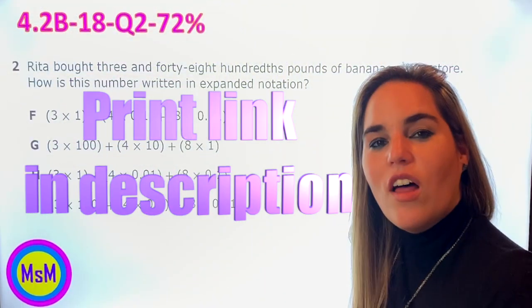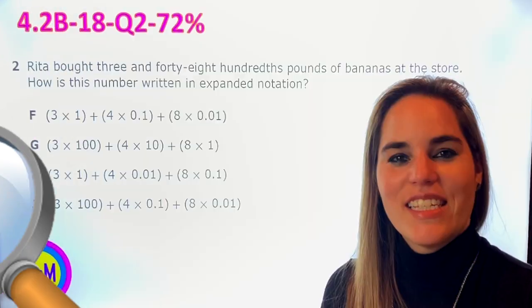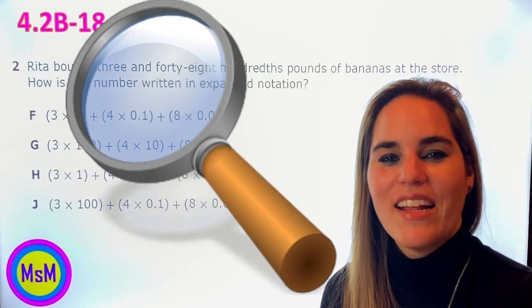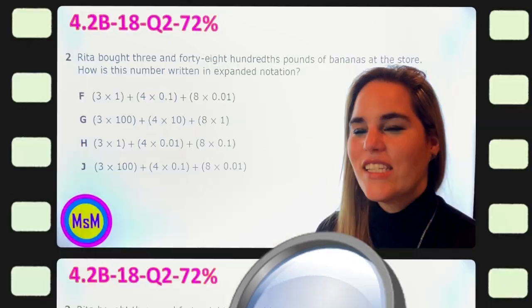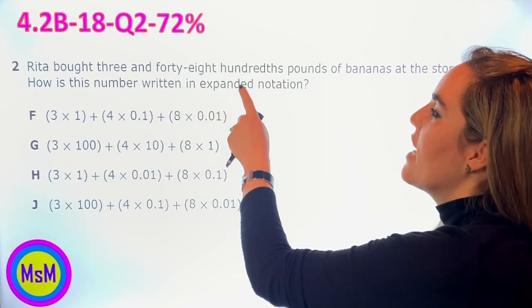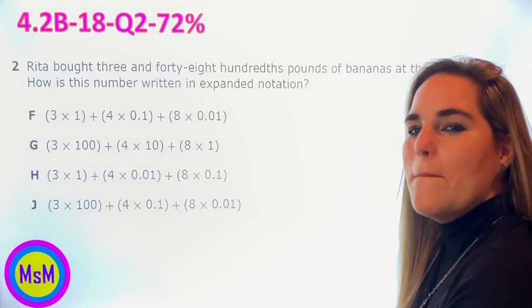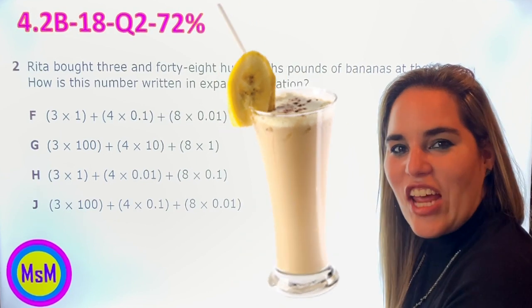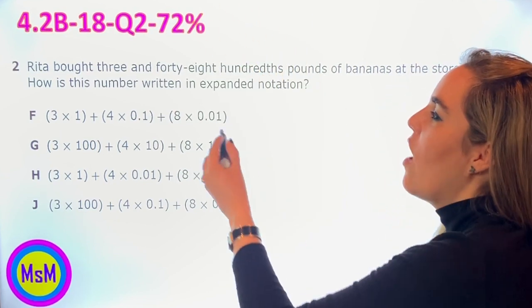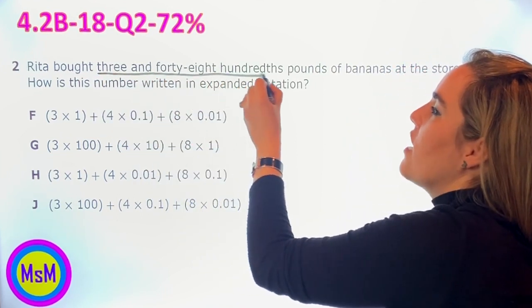To follow along, you can print the STAAR 2018, and it's question two. Step one: find the keywords. Let's read together. Rita bought three and forty-eight hundredths pounds of bananas at the store. Maybe she's making a banana shake, yum!